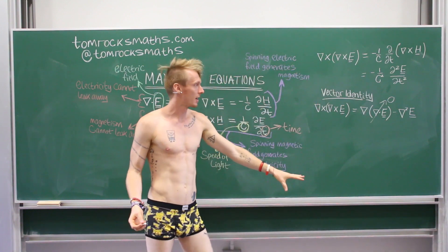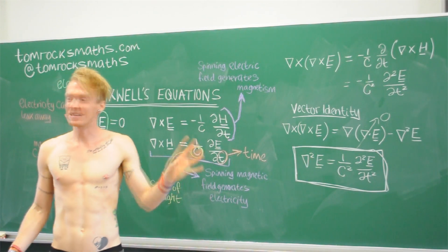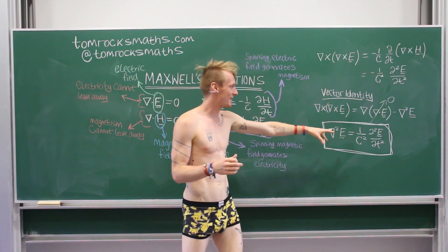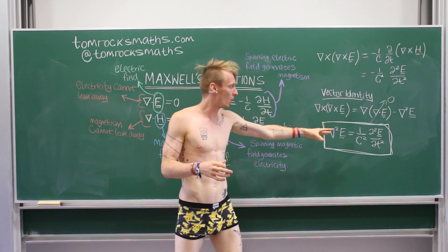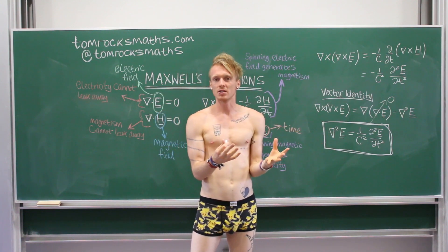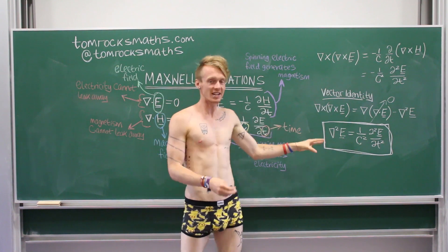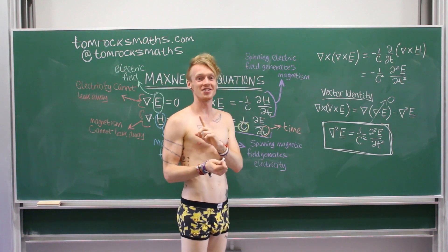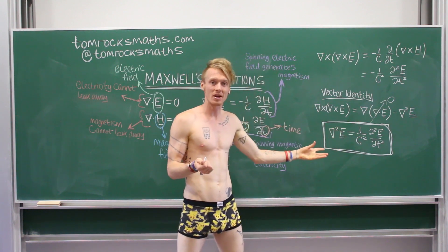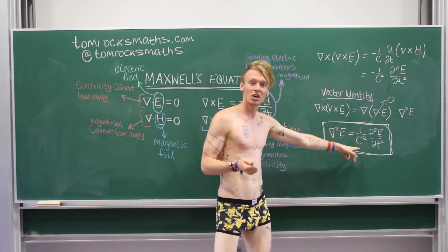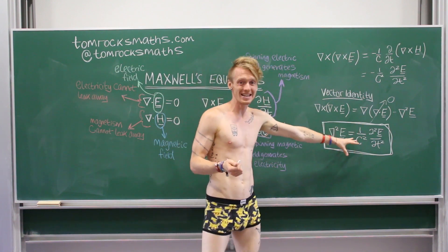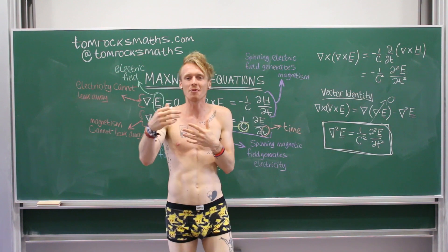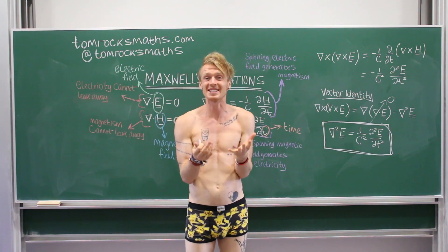This, hopefully, you will recognise, because this is the wave equation. And anything that solves the wave equation, which here the electric field E does, in this form, the solutions are waves. So, the fact that your electric field satisfies the wave equation tells you electricity is a wave. And it also tells you the speed, because the speed in the wave equation is given by the square root of the constant here. So, your speed is C, the speed of light, and your electricity is a wave. So, electricity is a wave moving at the speed of light, an electromagnetic wave.